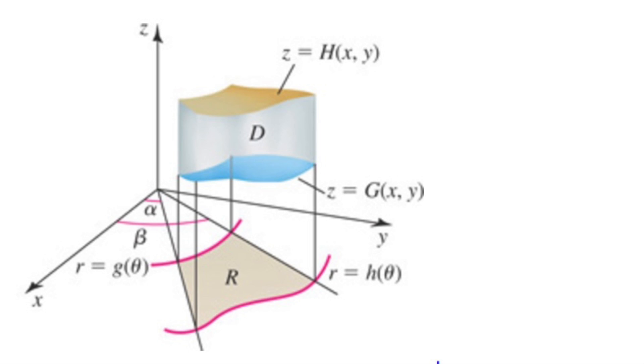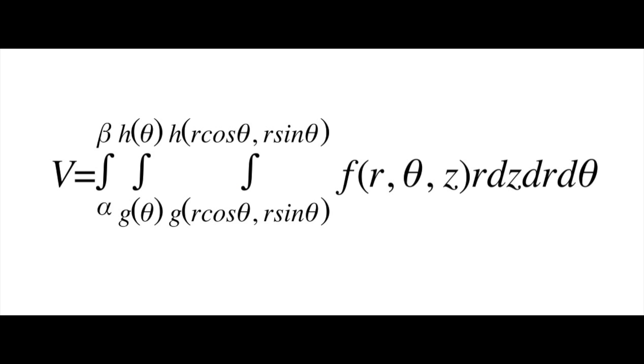To calculate the volume of a solid with F of R, theta, and Z in a polar region where R equals H theta is greater than R equals G theta, Z will be the inner integral from the bottom surface G of X and Y, or rewritten in polar coordinates G of R cosine theta and R sine theta, to the top surface H of R cosine theta and R sine theta.